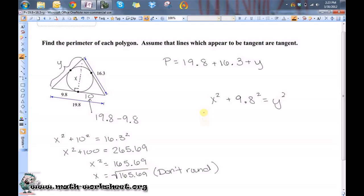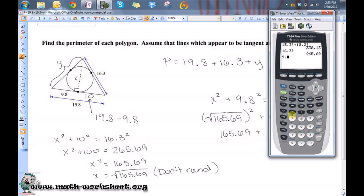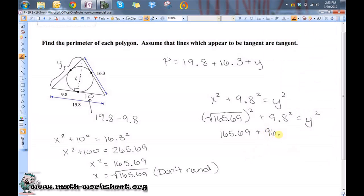We found x to be the square root of 165.69. So, this is 165.69 plus 96.04 equals y squared.